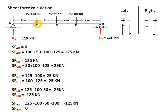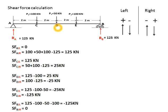At point C, looking left hand side, only the reaction 125 is there, which is upward, so it is positive: SF = 125. At C right hand side, there are two downward forces (positive): 50+100, and RB upward (negative): 125, giving 25. At D left hand side, P1 (100) is downward so negative, and 125 upward is positive: 125−100 = 25.